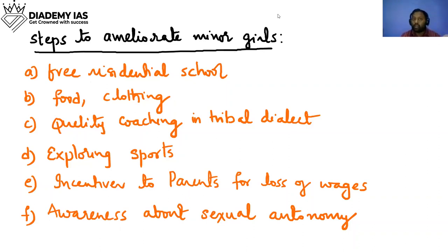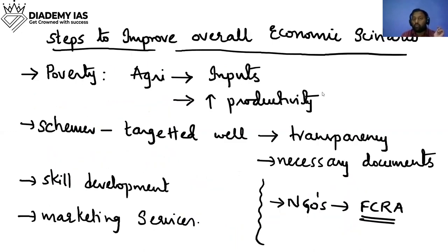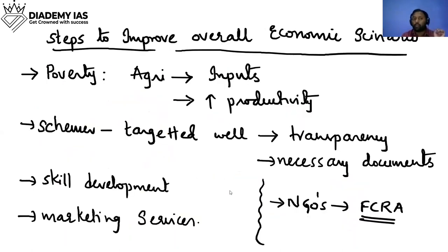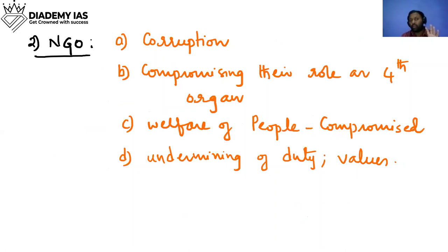To ameliorate the situation of minor girls, set up residential schools that are free and provide food, clothing, quality coaching, and explore options for sports. Since parents send girls for money, you must compensate parents for the loss of wage income as an incentive to send their girls to school instead. Alongside this, improve the overall economic scenario and raise awareness about sexual autonomy and overall education.